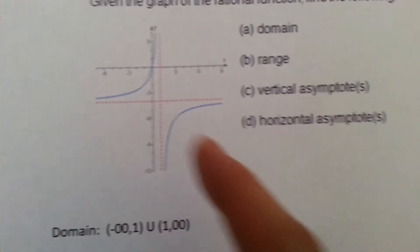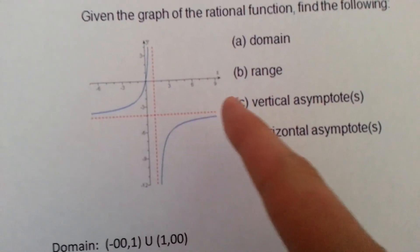The horizontal asymptote is at negative 4. And that's it.